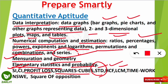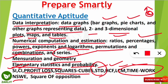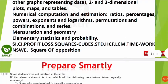HCF, LCM, time and work questions are important and frequently asked. Direction-based questions (NSWE — North, South, West, East) are also common — for example, someone starts at a point, moves 20 km north then 30 km south, and you must find their final position. Square of opposition questions are also asked; if you don't know this concept, there are many easy YouTube videos explaining it.